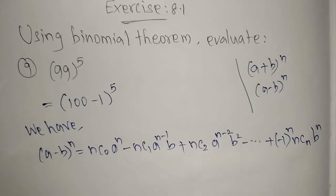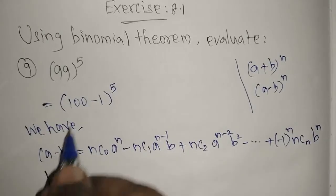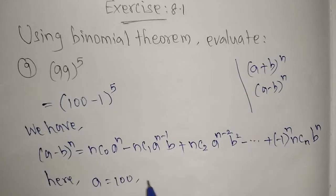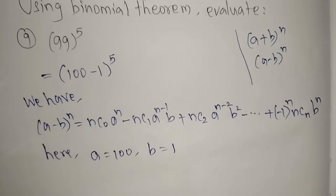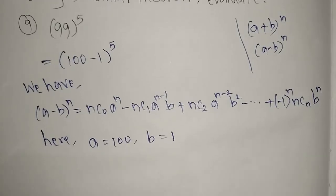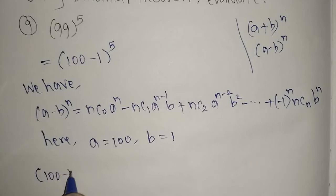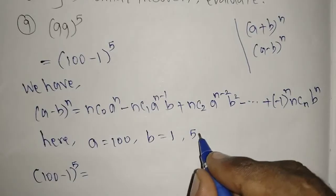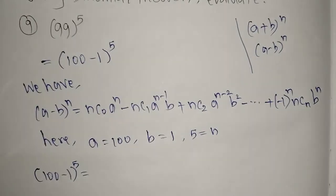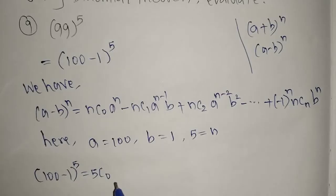Here, the value of a is 100 and the value of b is 1. We will substitute these values. For (100 - 1)^5, n is equal to 5. So we start with 5C0 * 100^5.